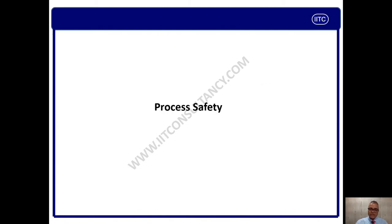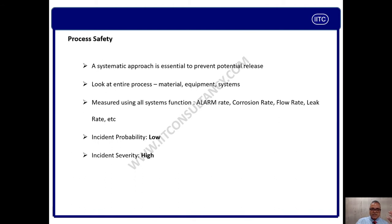Let us go ahead for process safety. As you know, the definition of process safety, as per the name, is the safety of process. Process safety primarily means LOPC — loss of primary containment. Process safety is a systematic approach to prevent potential release or LOPC. It looks at entire processes beginning from the material, equipment, systems and product. It is measured in different aspects like alarm rate, corrosion rate, flow rate and leak rate.